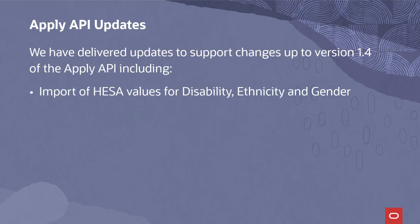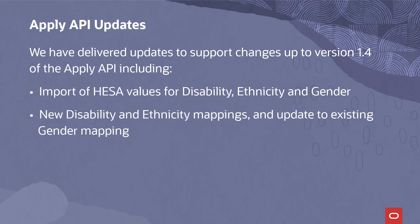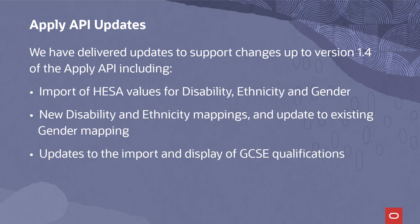We have delivered updates to support changes up to version 1.4 of the Apply API, including import of HESA values for Disability, Ethnicity and Gender. New Disability and Ethnicity Mappings and an update to the existing Gender Mapping to translate from HESA codes. Update to the import and display of GCSE Qualifications to include the new data fields.